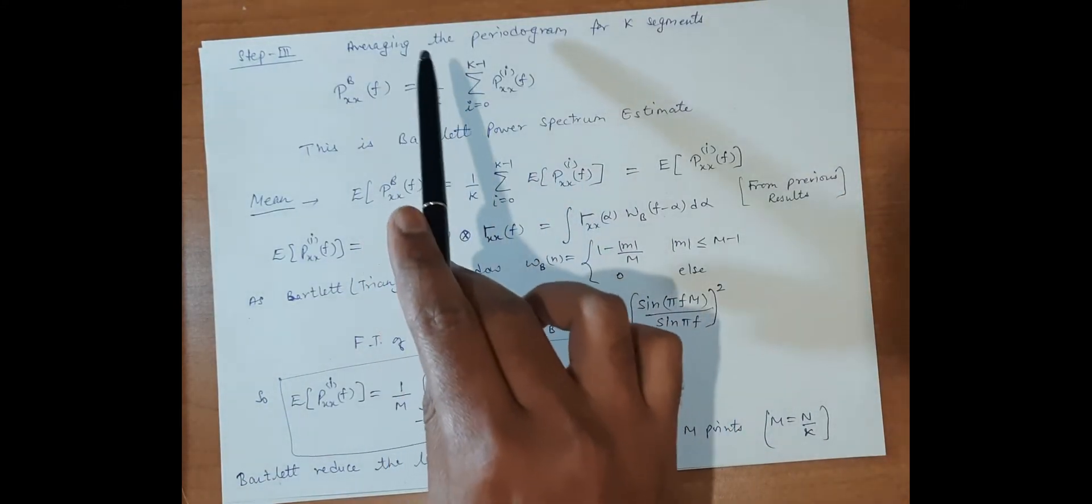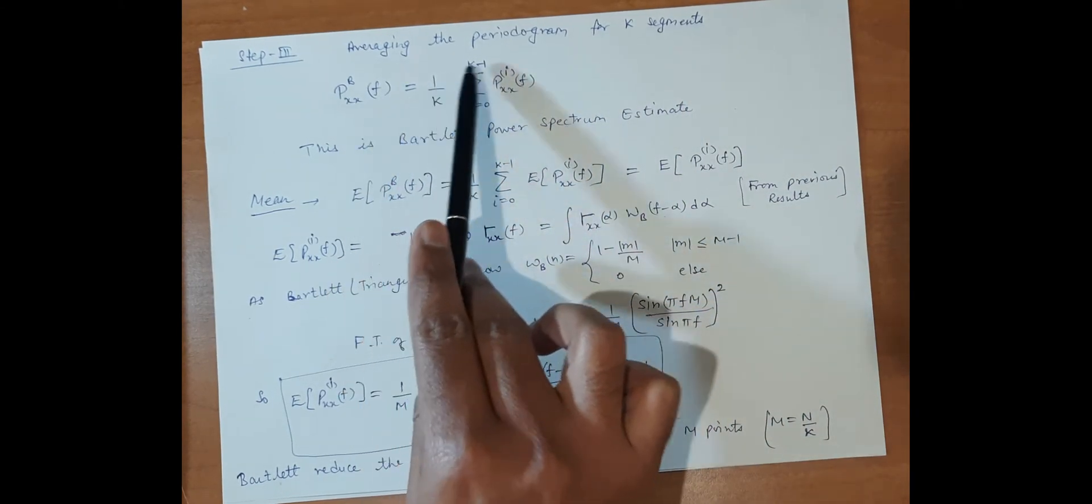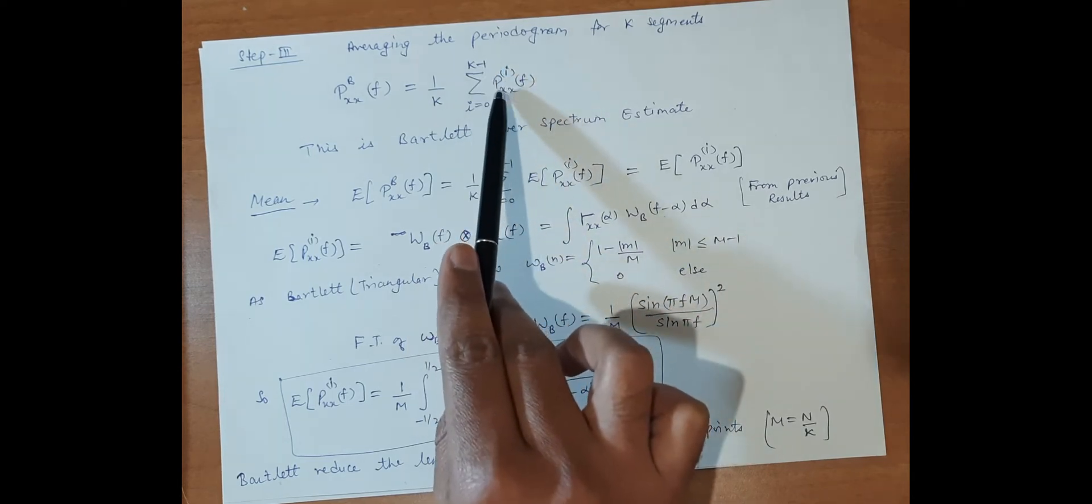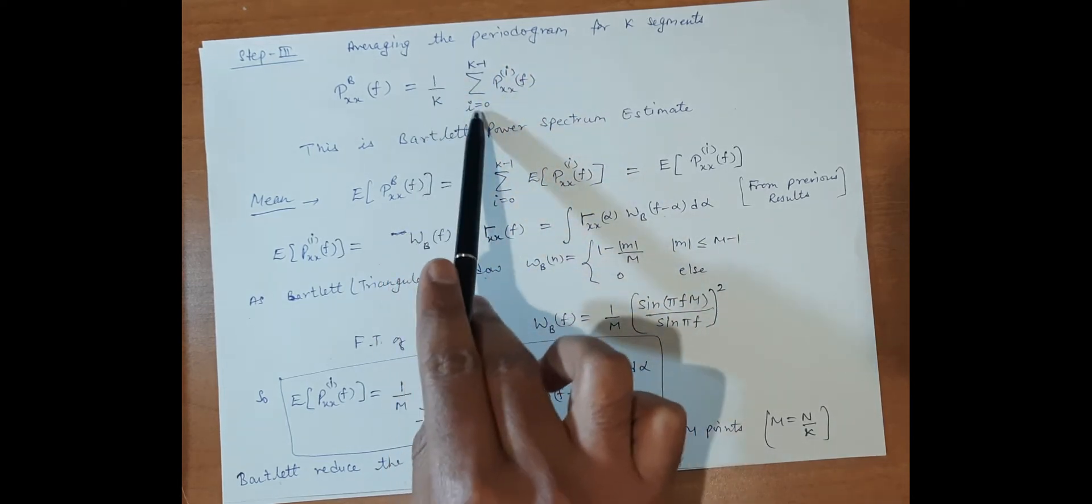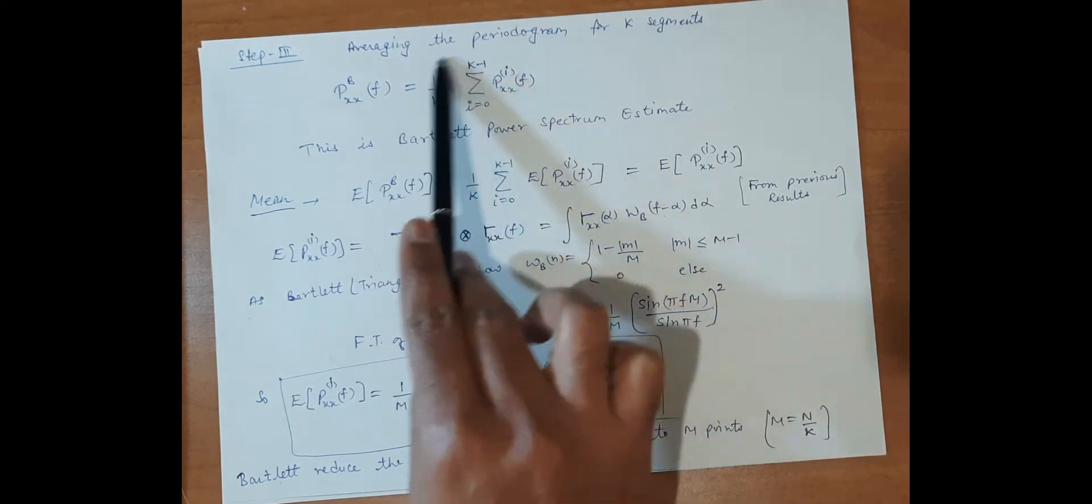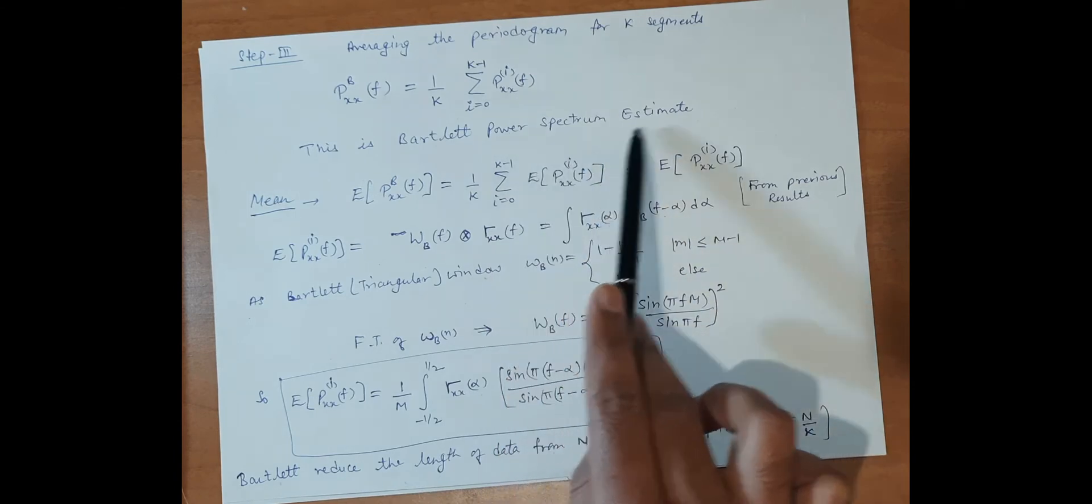The third step is averaging the periodogram for k segments. This is the averaging: summation of all the i values divided by the number of segments, 1 upon k. This is the Bartlett power spectrum estimate P_xx^B(f).